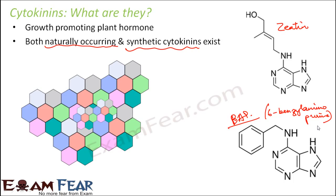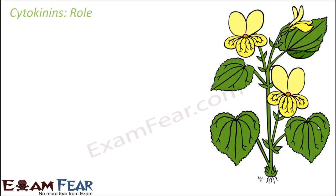The natural cytokinins, for example zeatin, are synthesized in those regions where rapid cell division occurs. Some of the regions in a plant where rapid cell division occurs include the apical regions — the root apices — and in young fruits, where fast cell division occurs and the fruit grows bigger in size and matures. These are the regions where a lot of cytokinins are synthesized.